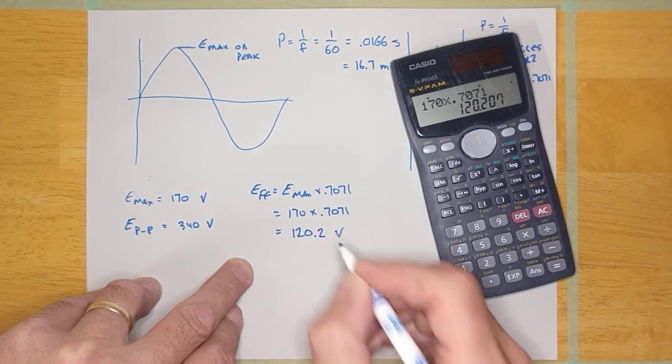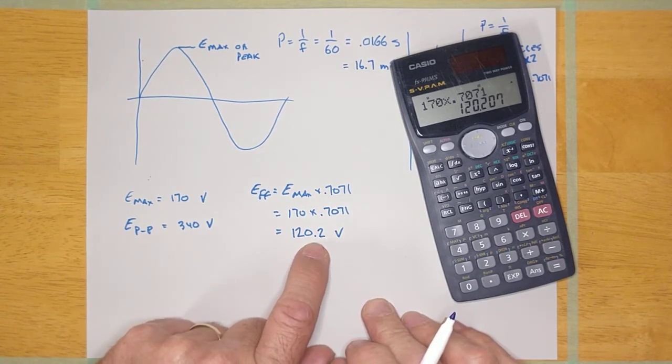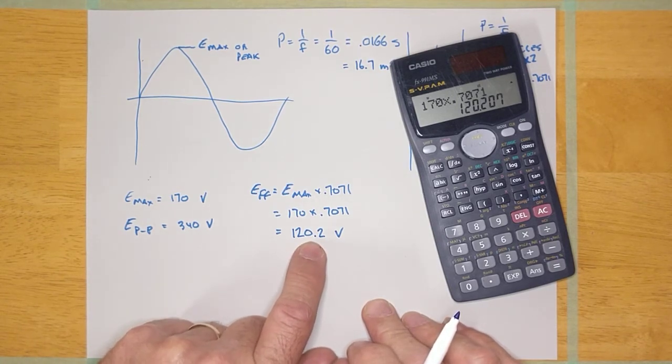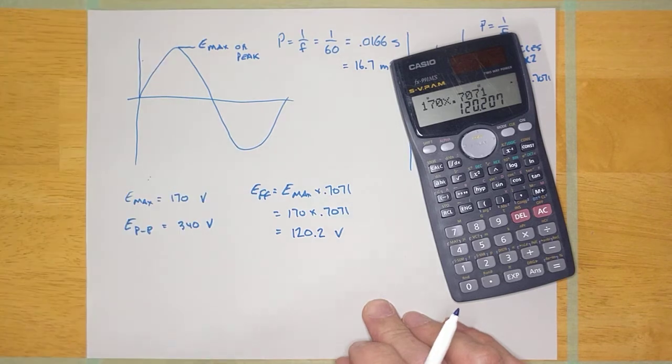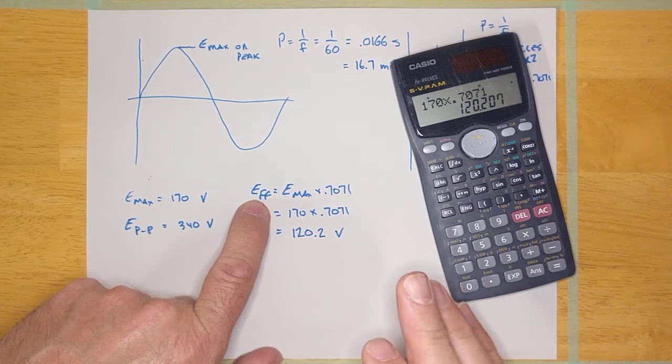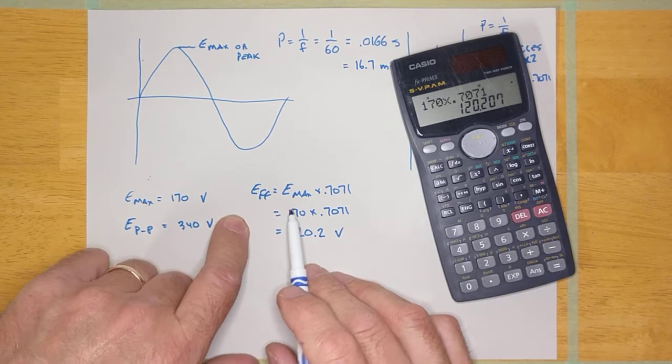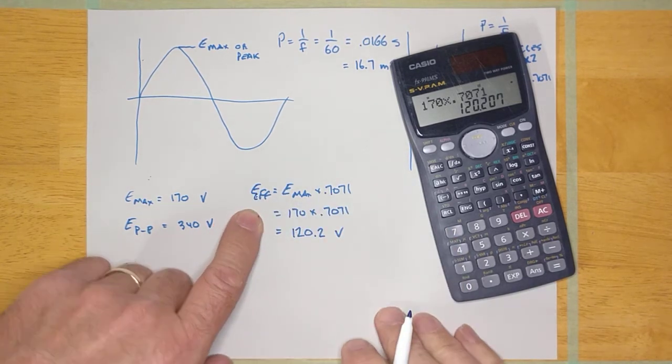120.2 volts. Now, I need you guys to remember that this is the voltage I would measure if I actually physically measured this voltage with a digital multimeter, because a digital multimeter, if you set it to AC, is going to measure the effective voltage. This is supposed to say E effective.